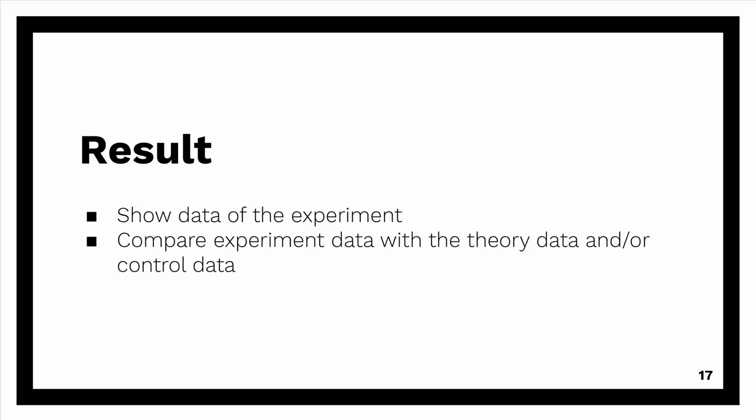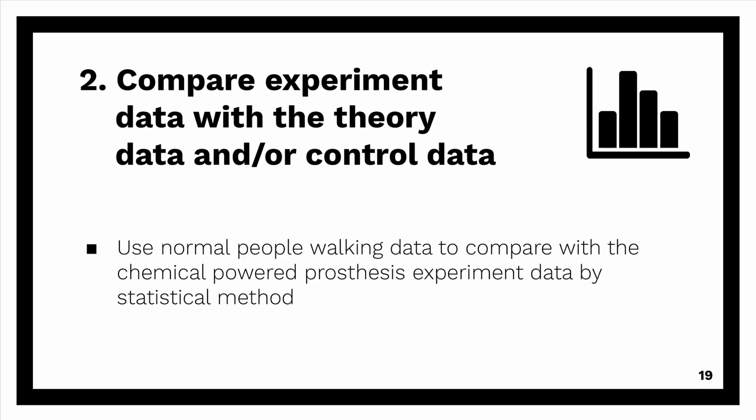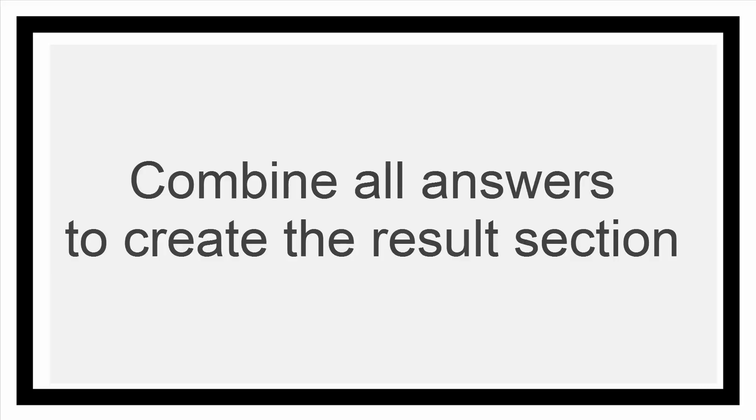In the results, we want to show the data of the experiment and compare the experiment data with the theory data and/or control data. What I did was record the knee and ankle joint movement data of the chemical powered prosthesis during the experiment. The second thing was to compare the experiment data with the theory data and control data. I used normal people's walking data to compare with the chemical powered prosthesis experiment data, using a statistical method. Then you need to combine all the answers in this section together — I'm going to leave that for you, because it is a very simple task.